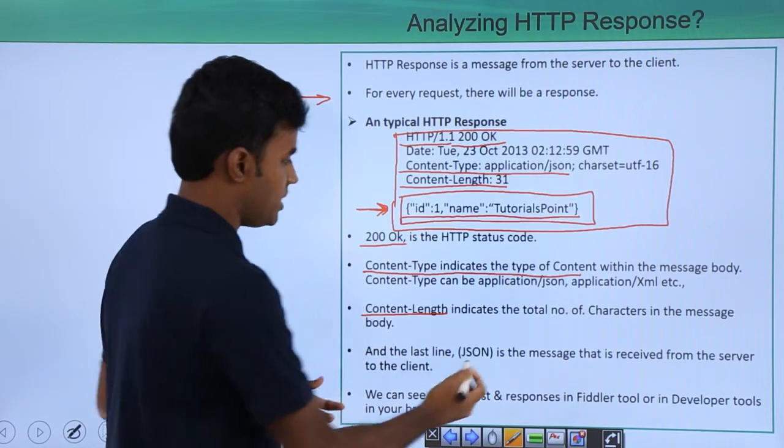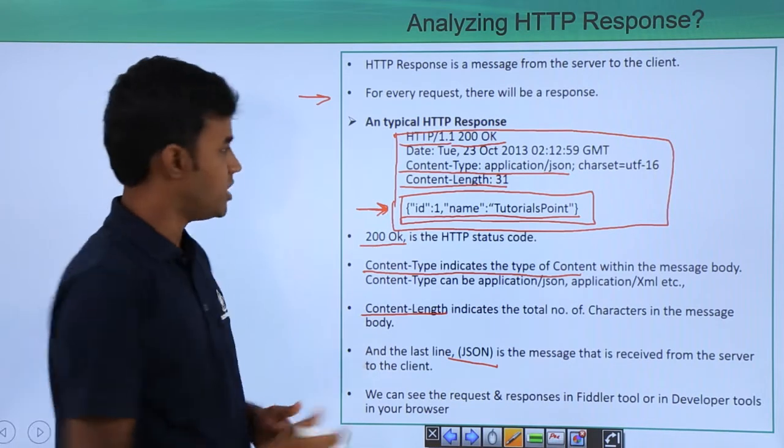And the last line, JSON is the message that has been received from the server to the client, which is this one.